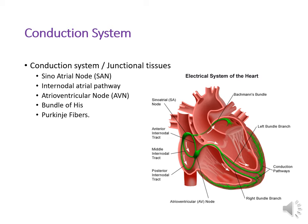The SA node also connects with the left atrium through the inter-atrial tract, also called Bachmann's bundle. From the AV node, the conduction system continues as the bundle of His, located in the interventricular septum, which then divides into the left and right bundle branches, from where arise the Purkinje fibers, also called the conduction pathways.